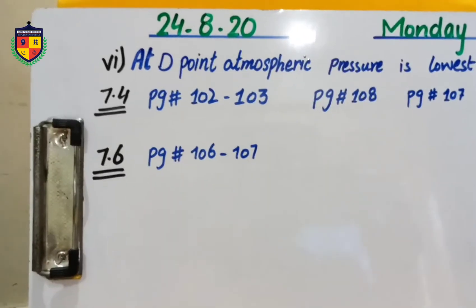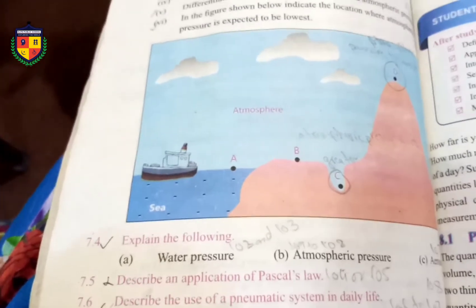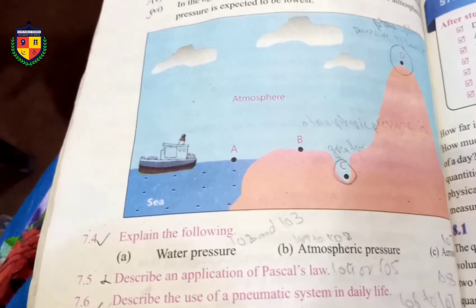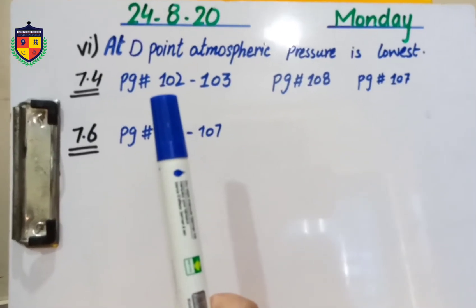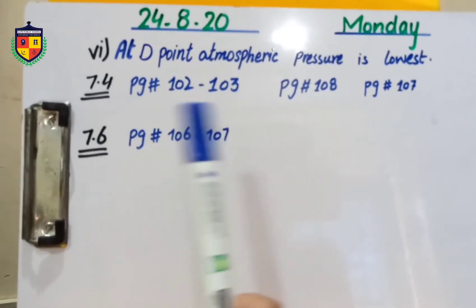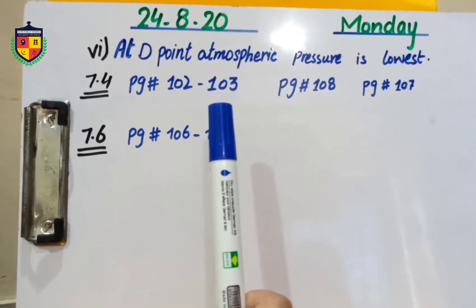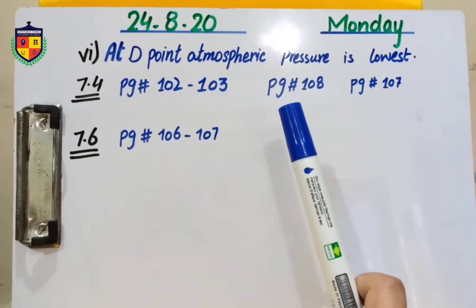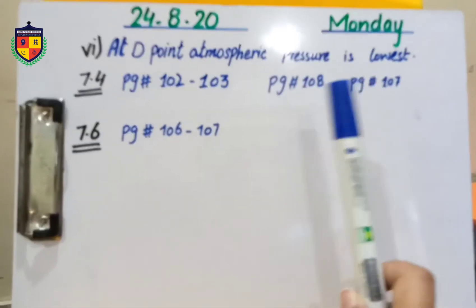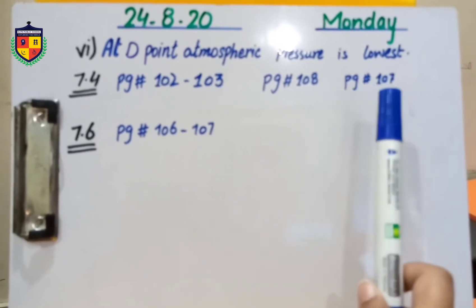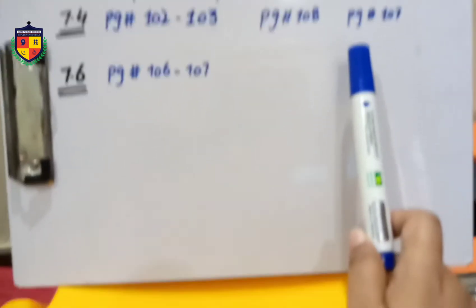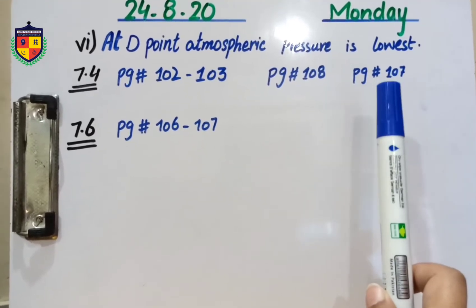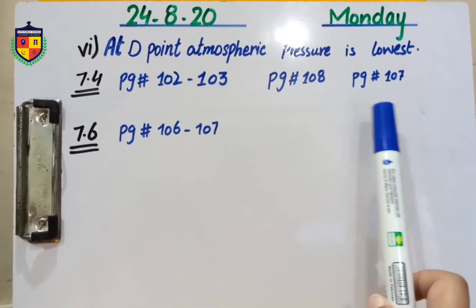Question number 7.4: Explain the following — water pressure, atmospheric pressure, and aerosols. For water pressure, refer to page numbers 102–103. For atmospheric pressure, refer to page number 108. For aerosols, refer to page number 107 — only how aerosols work is included, page 108 is not included.